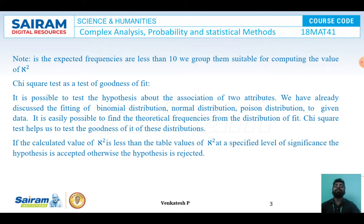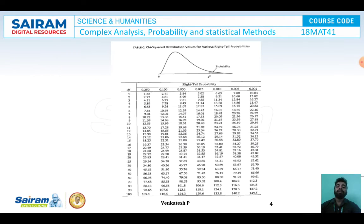Note that this chi-square distribution will be applicable only if the sample size is greater than 10. This is the chi-square distribution table, and we will always make use of this table to solve problems.